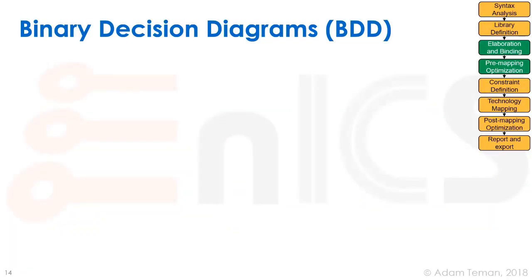I want to go into one of the structures used for storing boolean logic, for storing truth tables inside the computer. It's called the binary decision diagram, or BDD, and it's very widely used throughout synthesis and throughout different algorithms that operate on our net lists.